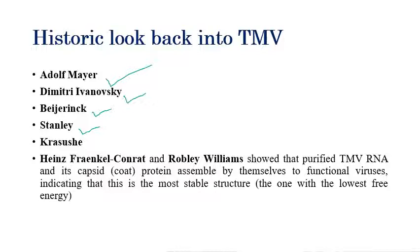TMV was also the first virus to be seen under the electron microscope, observed by Kausche. Later, Fraenkel-Conrat and Robley Williams showed that purified TMV RNA and its capsid proteins can assemble themselves into functional virus particles. Because so many foundational experiments were conducted using TMV, it serves as a model organism for the study of plant viruses.